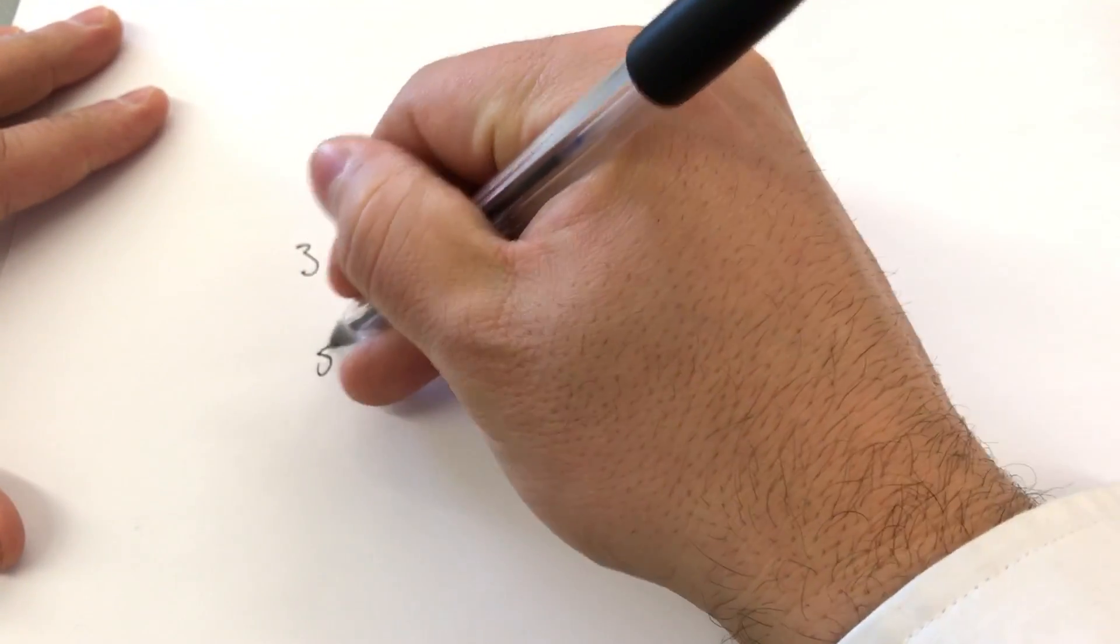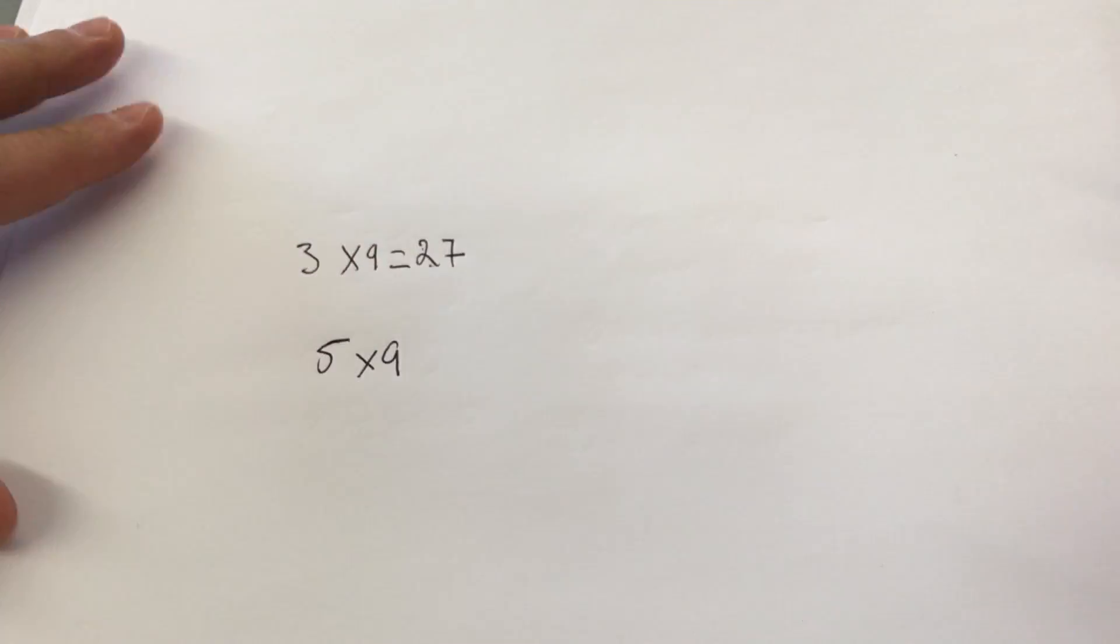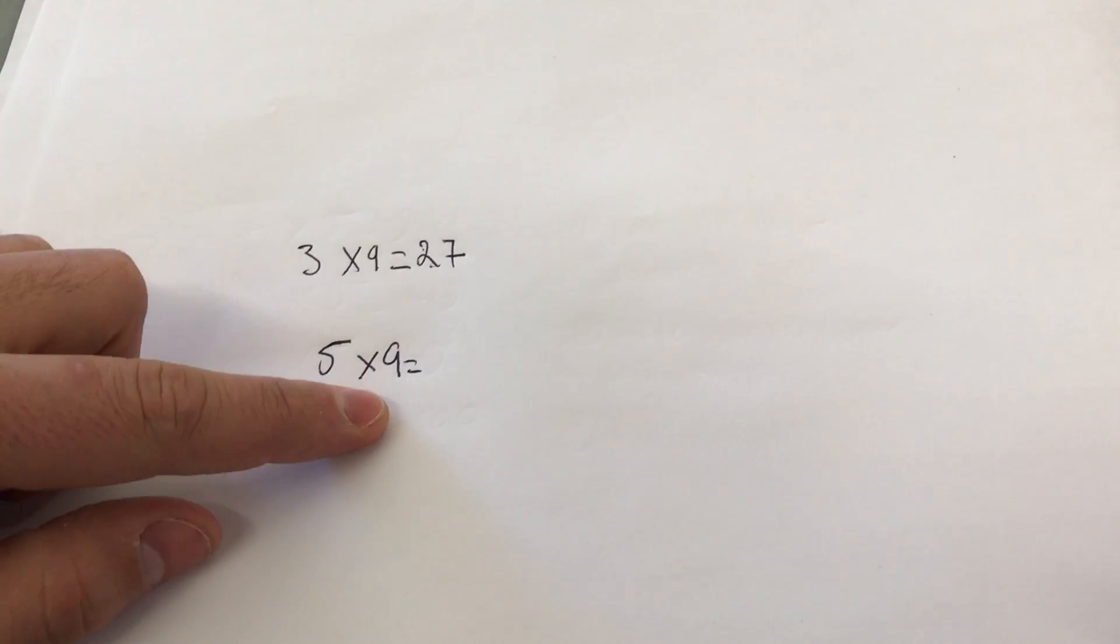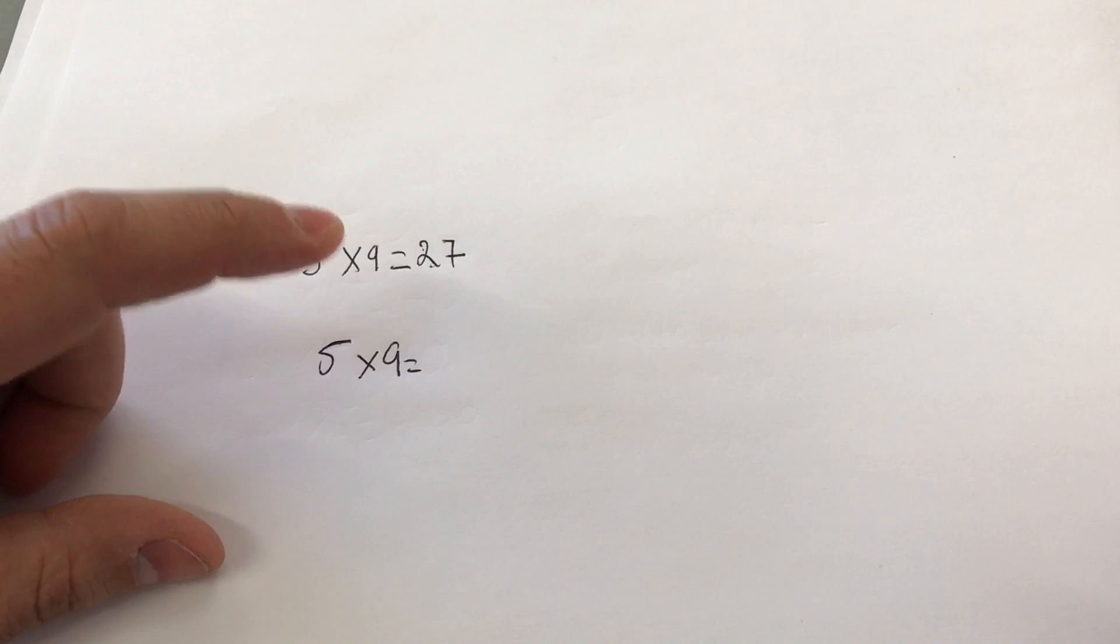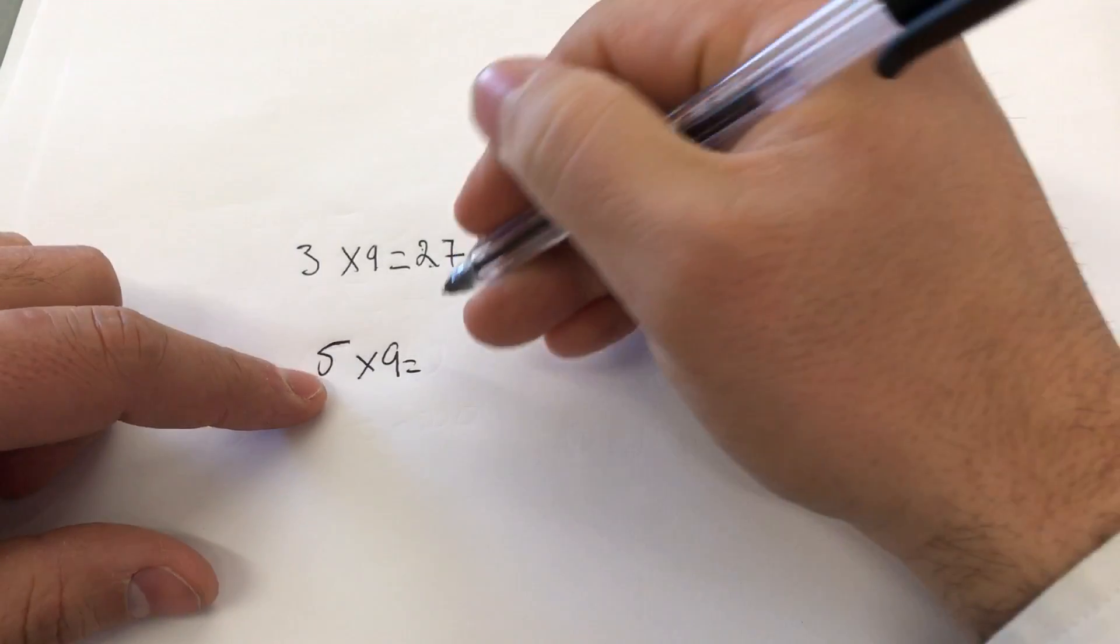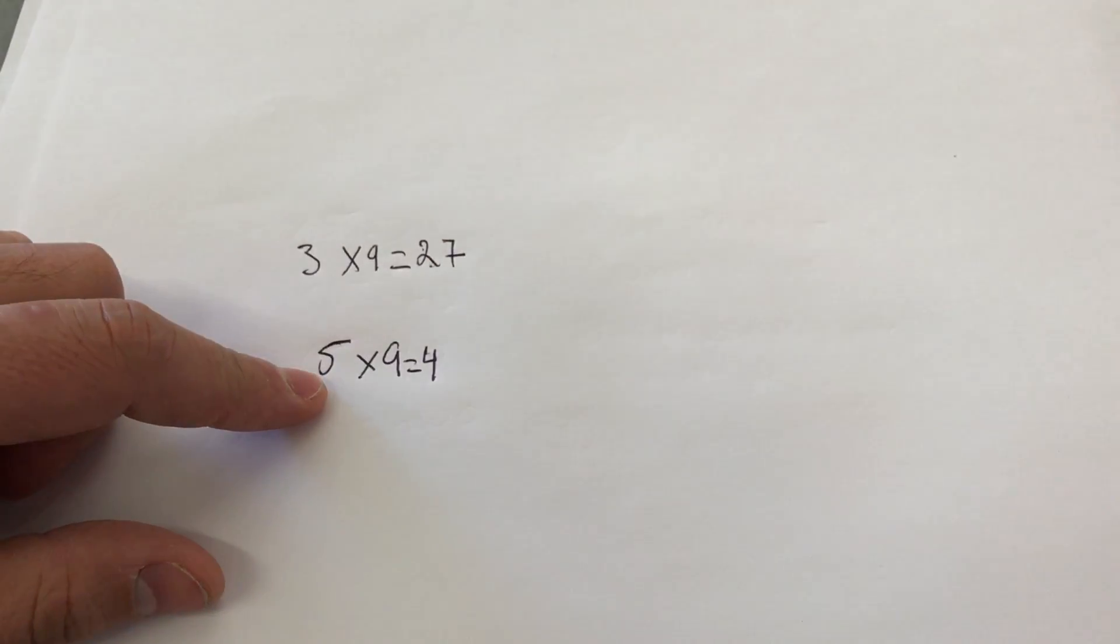Let's do a bigger number, 5 times 9. Very simple. Once again, we're multiplying 5 by 9. We take the non-9 number, which is 5, and subtract 1 from 5, which gives us 4. That's our first digit.